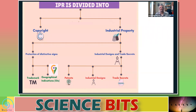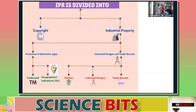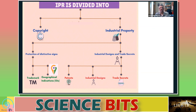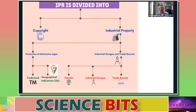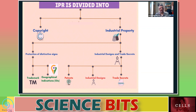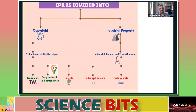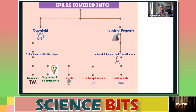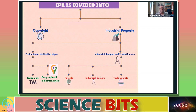The second category of industrial property includes industrial designs and trade secrets. Patents are issued by the patent office, industrial designs are protected, and trade secrets are also protected. These are all the various IPR areas which come into play.